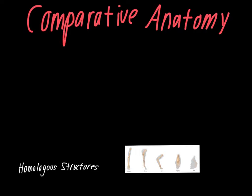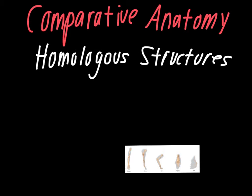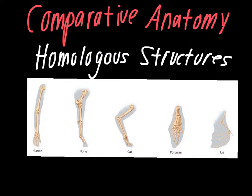The next section of evidence goes a little quicker. These are referred to as homologous structures. Homologous means same, so homologous structures have the same or similar structures even though the limbs may have different functions. This image from your textbook does a great job breaking this down. If we look at the similarities between the human limb, the leg of a horse, the leg of a cat, the forelimb of a porpoise, and the wing of a bat — morphologically, they all follow the same general bone structure.